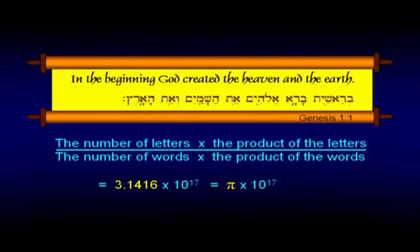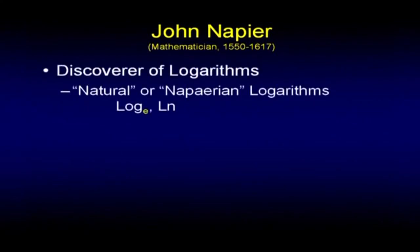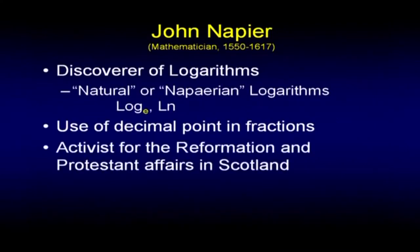That happens to be pi times 10 to the 17th. There's a man by the name of John Napier that you probably haven't run into unless you were in advanced math. He was the discoverer of what we call logarithms, and natural or Napierian logarithms are named after him — that's when the logarithm is to the base of E. He also promoted the use of the decimal point and fractions, and was an activist for the Reformation in Scotland. In those early years, whether it's Isaac Newton or whoever, these great scientists were also great churchmen who took the Bible seriously.